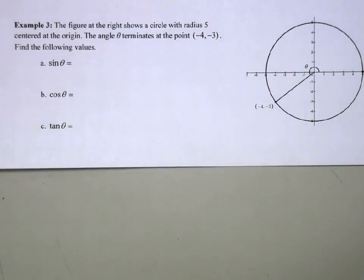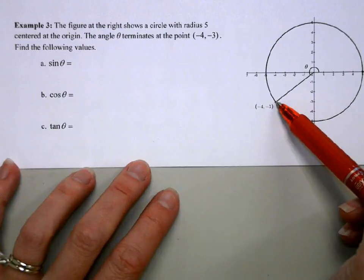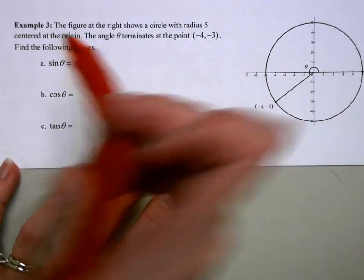Next, I've got a circle with a radius of 5. I have an angle theta that terminates at the point negative 3, negative 4. And we're going to find the three trig functions, sine, cosine, and tangent, for that point.